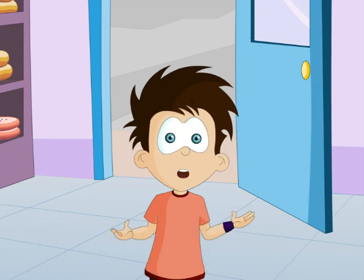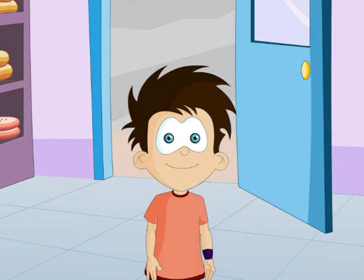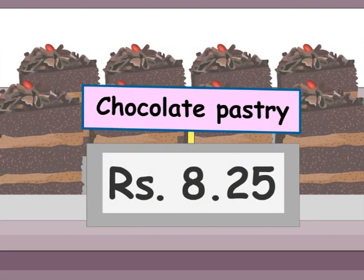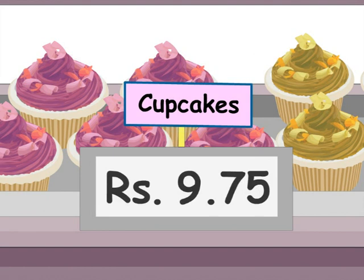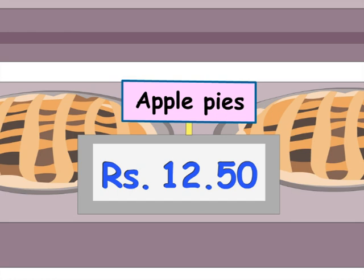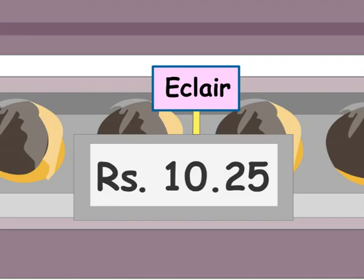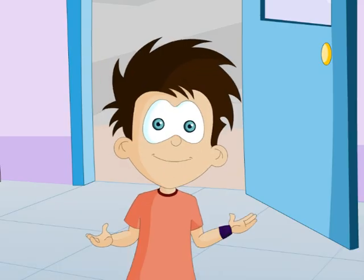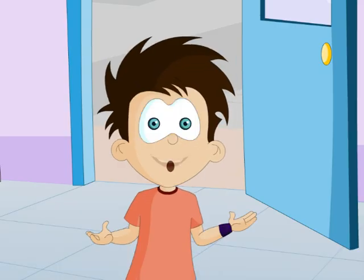I hope I have enough money. Let's see now. Chocolate pastry: 8 rupees 25 paise. Cupcake for 9 rupees 75 paise. Apple pie for 12 rupees 50 paise. And this eclair is for 10 rupees 25 paise. Oh no! Now how do I add all this up?